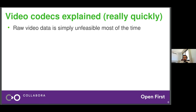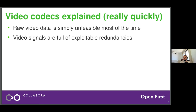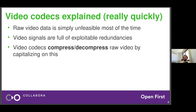Not all video is compressed though. For example, if you have a video game console connected via HDMI to your television, that's not compressed video. But for storing or streaming through streaming services, it has to be compressed. Luckily for us, video signals are full of exploitable redundancies. There's a whole lot of information inherent in video signals that we can exploit in order to reduce file size, and this is what Video Codecs are.